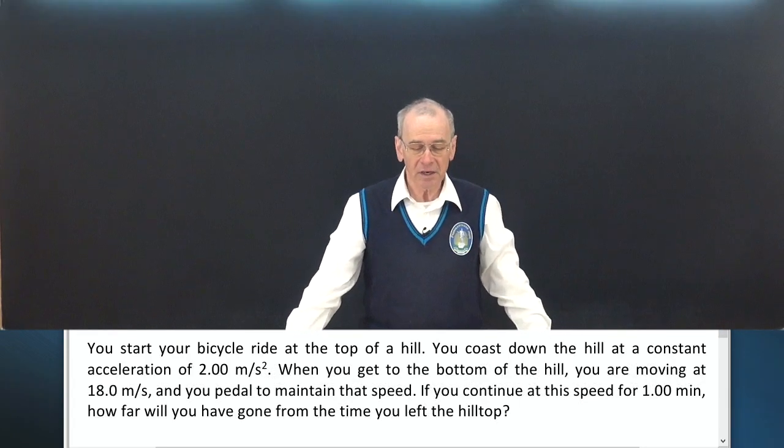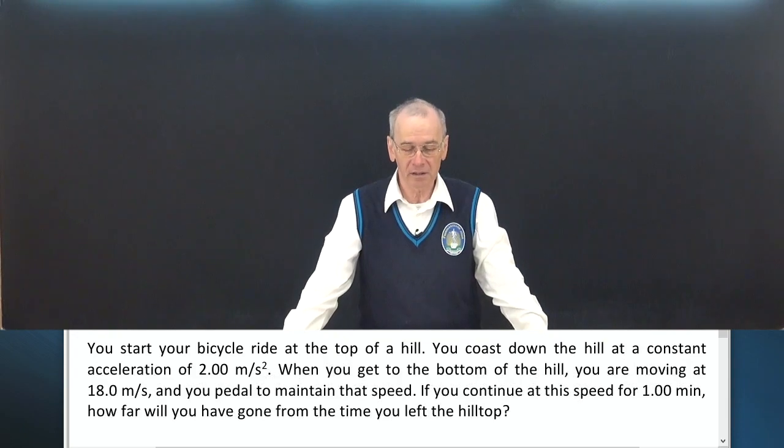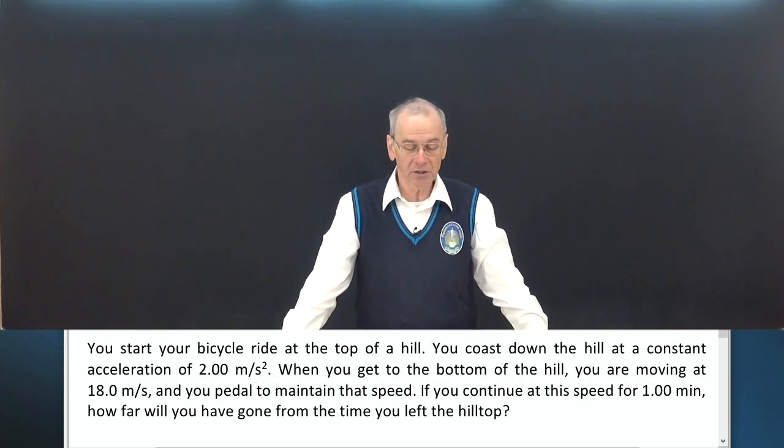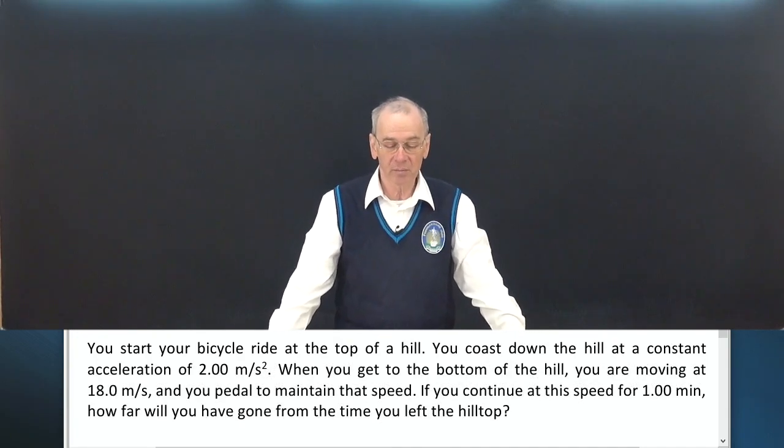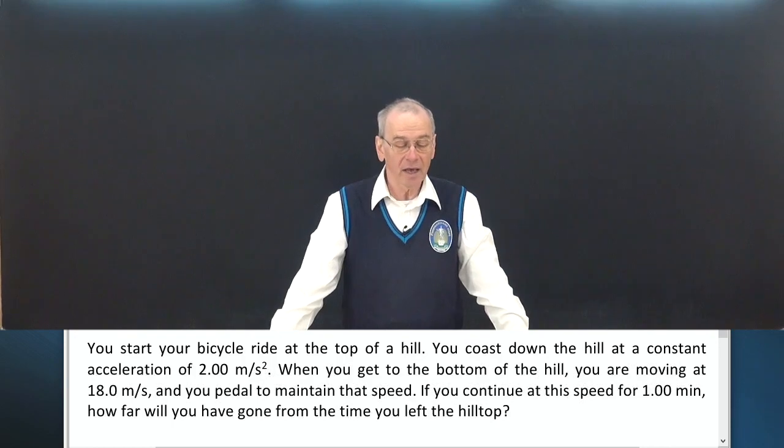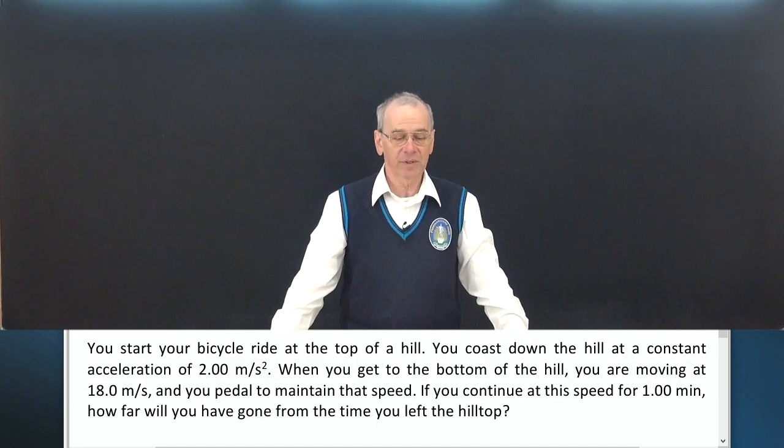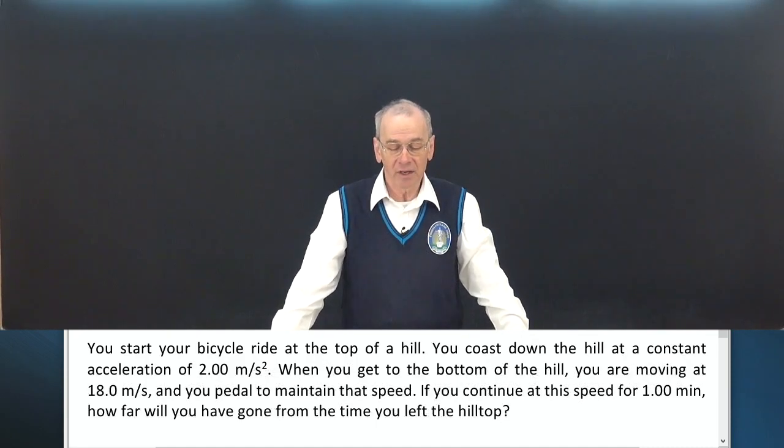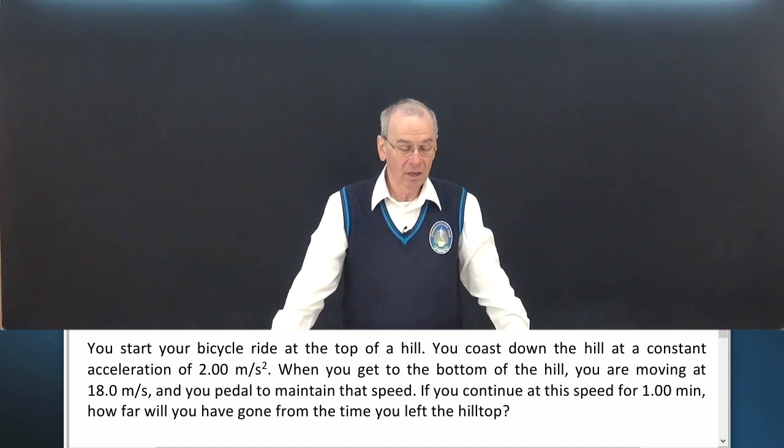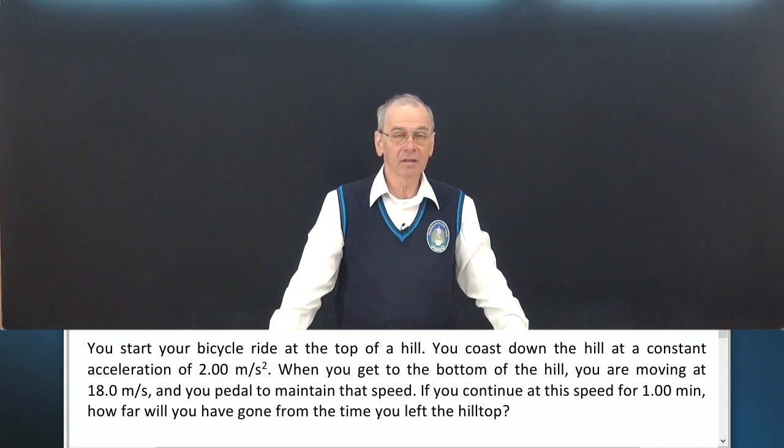You start your bicycle ride at the top of a hill. You coast down the hill at a constant acceleration of 2 meters per second squared. When you get to the bottom of the hill, you are moving at 18 meters per second and you pedal to maintain that speed. If you continue at this speed for one minute, how far will you have gone from the time you left the hilltop?